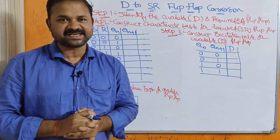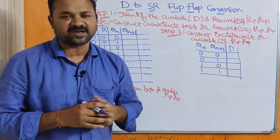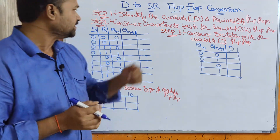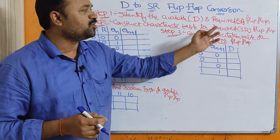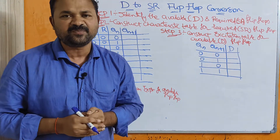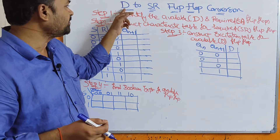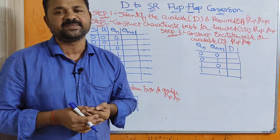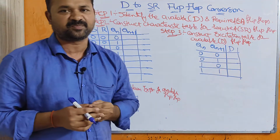Now let us discuss D to SR flip-flop conversion. We have to follow 5 steps. Step 1 is to identify the available and the required flip-flops. The available flip-flop, that is the input flip-flop, is D. The required flip-flop, that is the output flip-flop, is SR flip-flop.